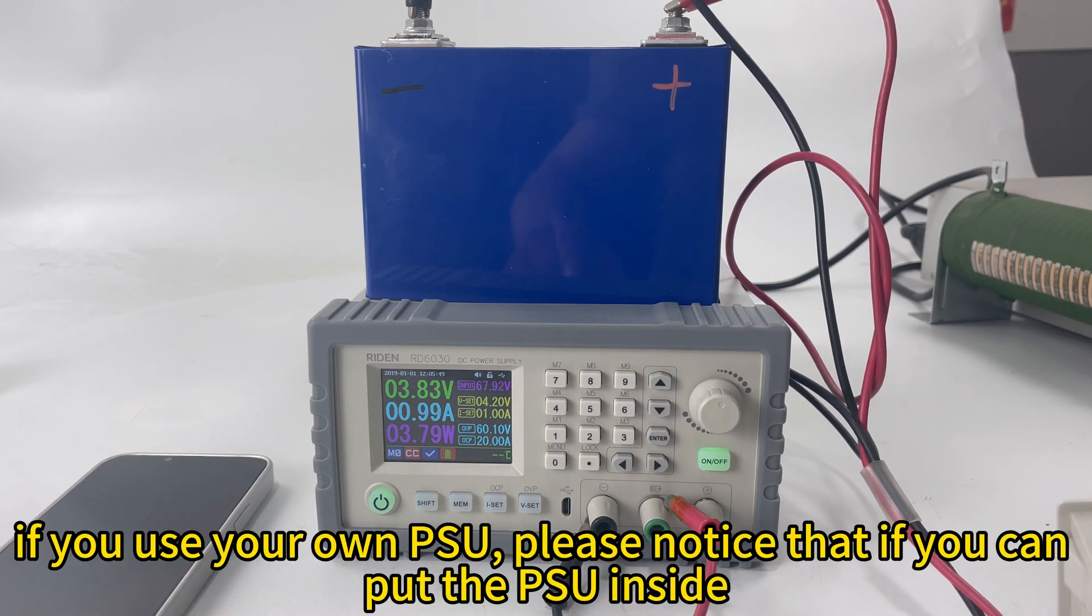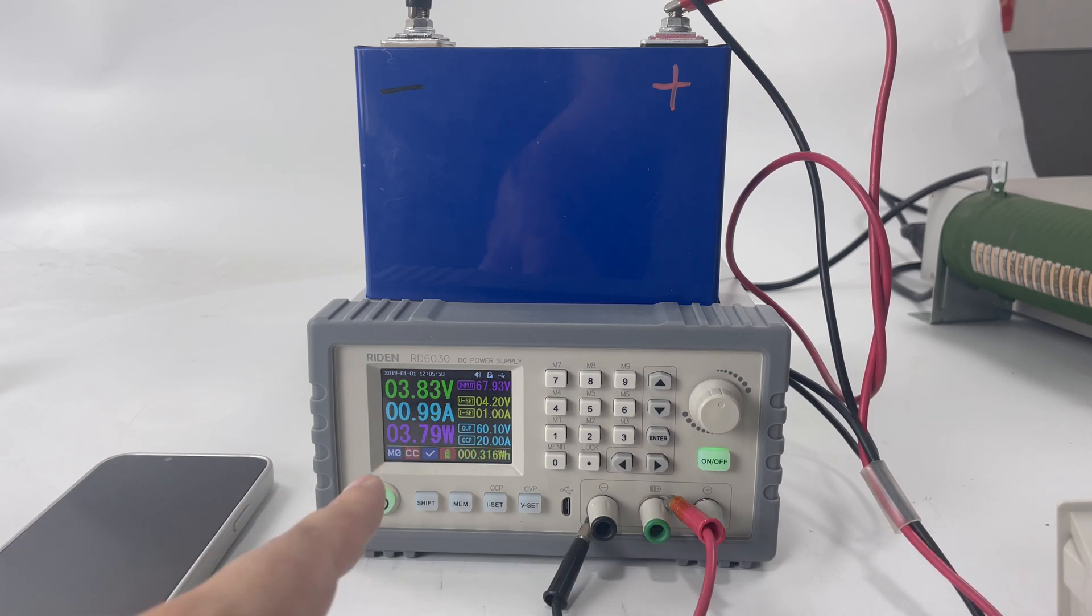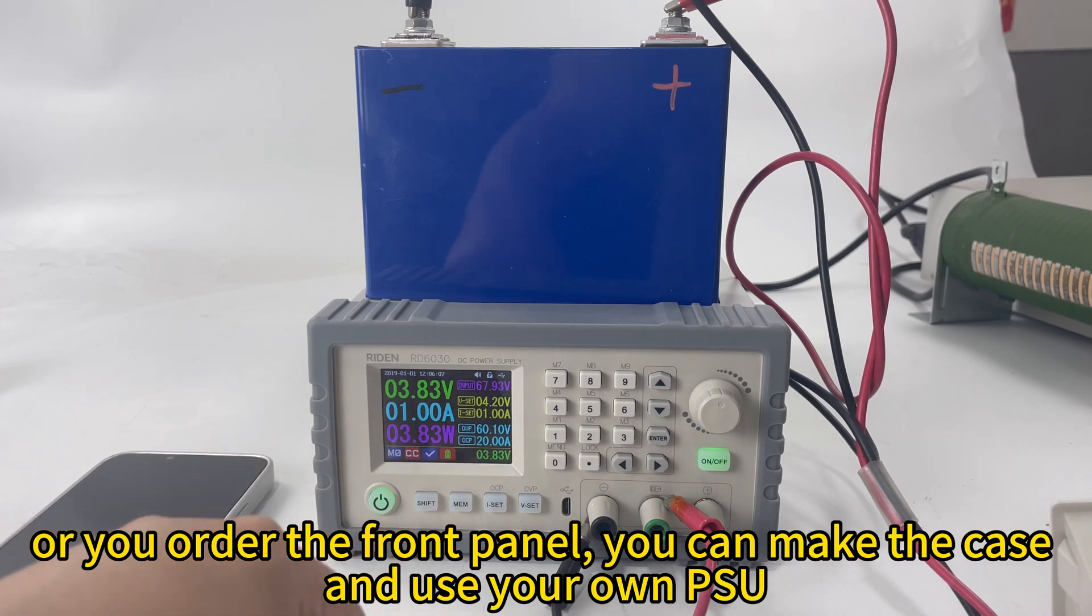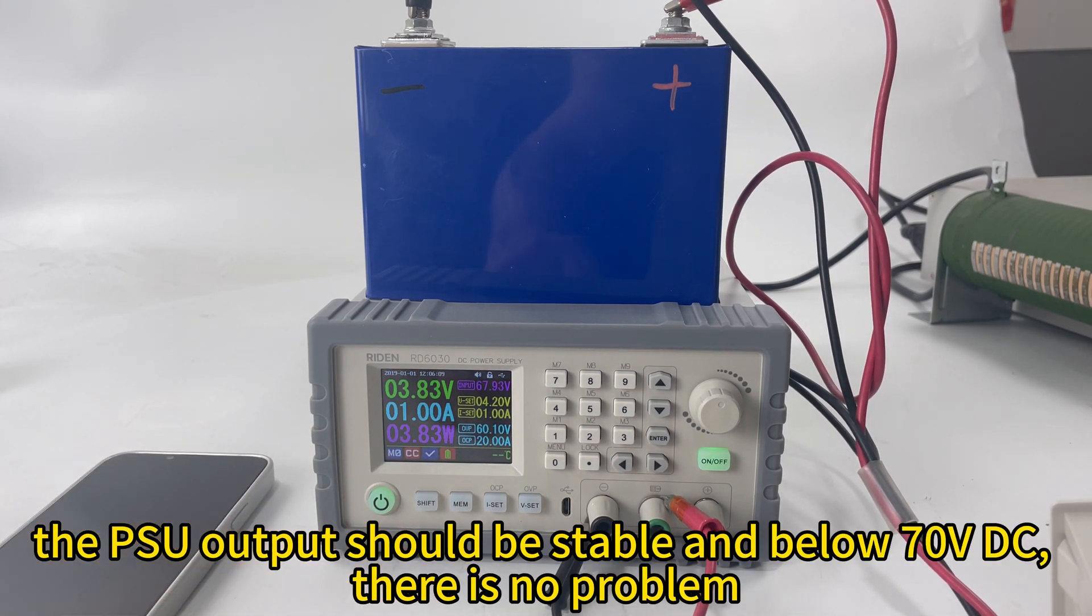If you want to use your own switching power supply, you need to check if you can install your PSU inside the case. Or if you just order the panel, front panel, it is okay that you make the case by yourself and use your own PSU. Just make sure that the input switching power supply can have stable output voltage and below 70 V DC. There is no problem.